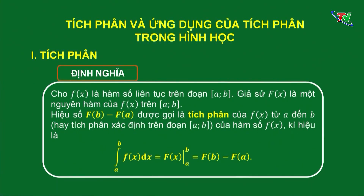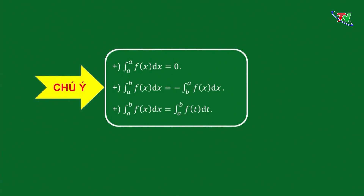Qua đây, các em phải chú ý đến một số kết quả như sau. Kết quả thứ nhất, tích phân đi từ A đến A của f(x) bằng 0. Kết quả thứ hai, tích phân từ A đến B của f(x) thì bằng trừ tích phân từ B đến A của f(x). Có nghĩa là, khi các em đổi vị trí 2 cận cho nhau, thì giá trị của tích phân đổi dấu. Kết quả thứ ba, tích phân từ A đến B của f(x) cũng bằng tích phân từ A đến B của f(t). Điều này có nghĩa, giá trị của tích phân chỉ phụ thuộc vào hàm số dưới dấu tích phân 2 cận A và B mà không phụ thuộc vào biến số của nó.